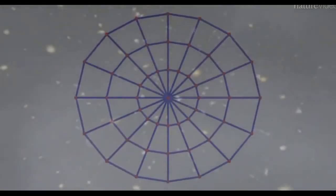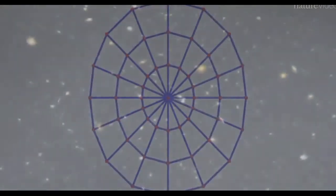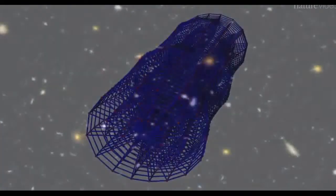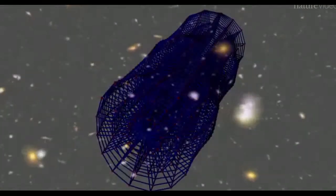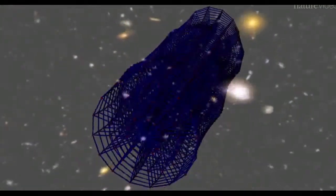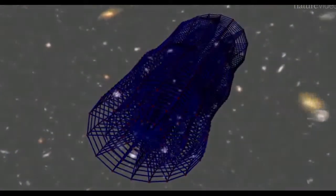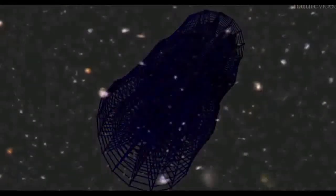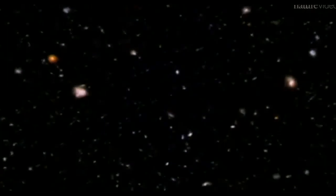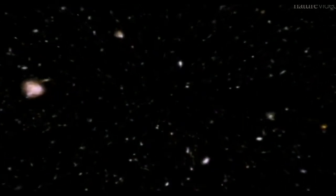As gravitational waves pass through the universe, they compress and expand space. Finding the very first gravitational waves would tell us about the birth of the universe, if only we could see them. The expanding universe would have stretched these primordial waves so much that today the distortions they cause would be absolutely minuscule.